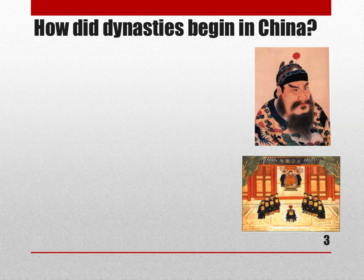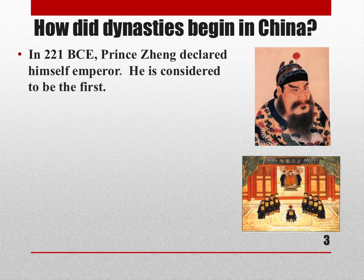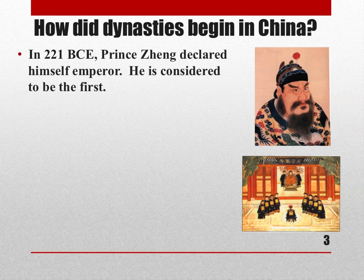We're going to talk about how the system of dynasties began in China. The first dynasty started as a result of a gentleman by the name of Prince Zhang. In 221 BCE — Before Common Era — Prince Zhang ruled over most of what we now consider to be China, declared himself emperor, and is widely considered to be the first ever emperor of China.